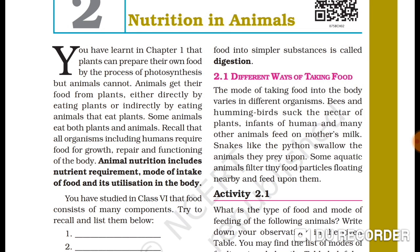Point 2.1: Different ways of taking food. The mode of taking food into the body varies in different organisms — every animal's food and way of eating is different. Bees and hummingbirds suck the nectar of plants.